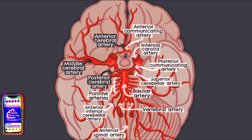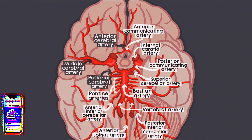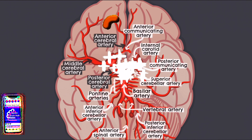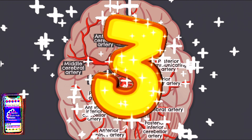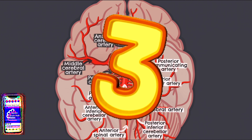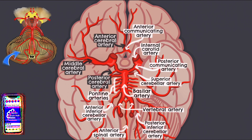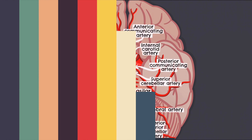Finally, we have the posterior inferior cerebellar artery. This is the largest branch of the vertebral artery and the last of the three main arteries to supply blood to the cerebellum. A stroke of this artery is sometimes called Wallenberg syndrome.